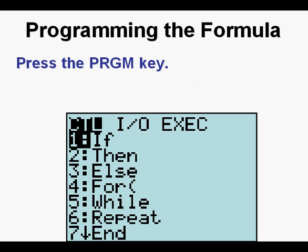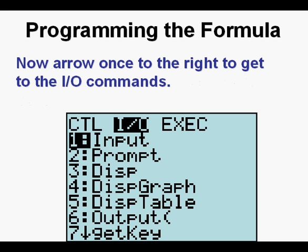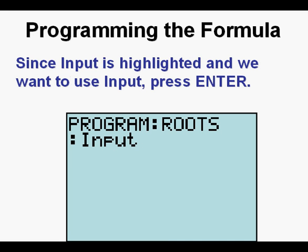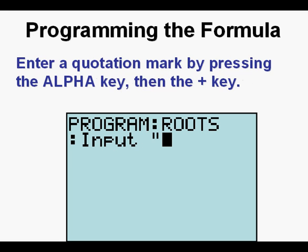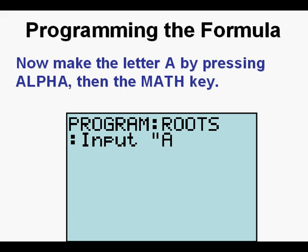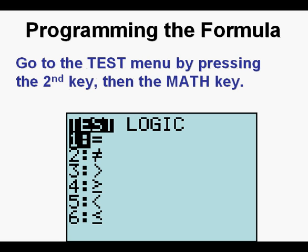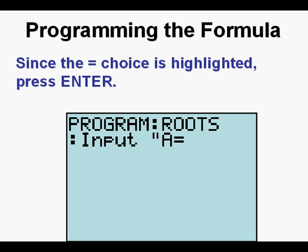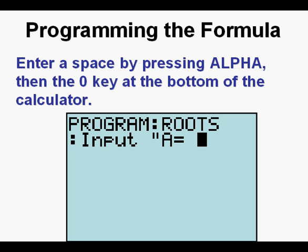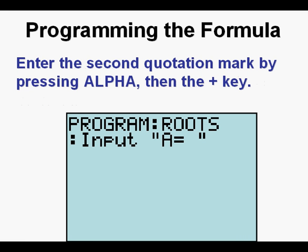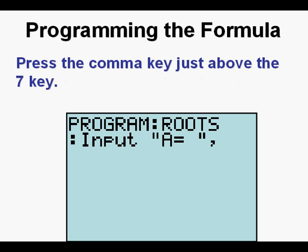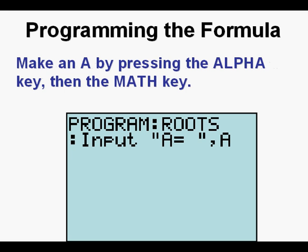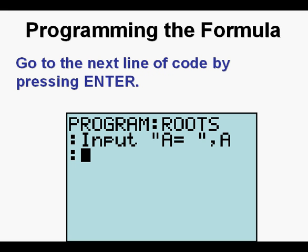Press the Program key, then arrow once to the right to get to the input/output commands. Since Input is highlighted and we want to use Input, press Enter. Enter a quotation mark by pressing the Alpha key, then the Plus key on the right side of the calculator. Make the letter A by pressing the Alpha key, then the Math key. Go to the Test menu by pressing Second, then the Math key. Since the equal sign choice is highlighted, press Enter. Enter a space by pressing Alpha, then the Zero key. Enter the second quotation mark by pressing Alpha, then the Plus key.